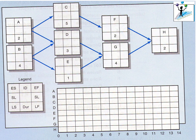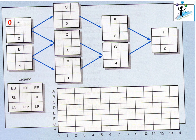In this tutorial we will learn how to do a forward pass and a backward pass, and use this to calculate the float, and ultimately transfer this information onto a Gantt chart. The logical diagram of the network has already been done showing precedence of different activities and their relationships. We always assume while manually scheduling a project that a project starts at day zero.